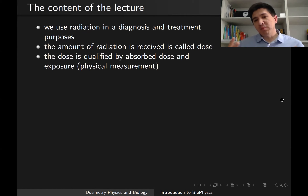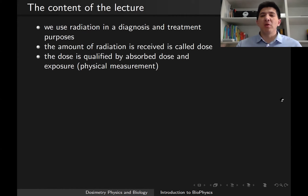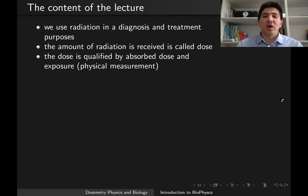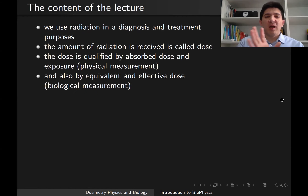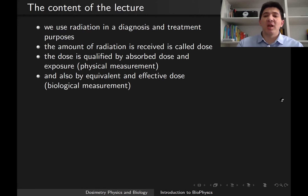A natural question for us is: how much radiation is a human getting, and is it damaging, and how damaging is it? The subject which studies all of these processes — measuring the doses — is called dosimetry. Today we're going to talk about topics like exposure and absorbed dose, which are ways of measuring the physical effects of radiation, and also about equivalent and effective dose, which measure the biological effects.